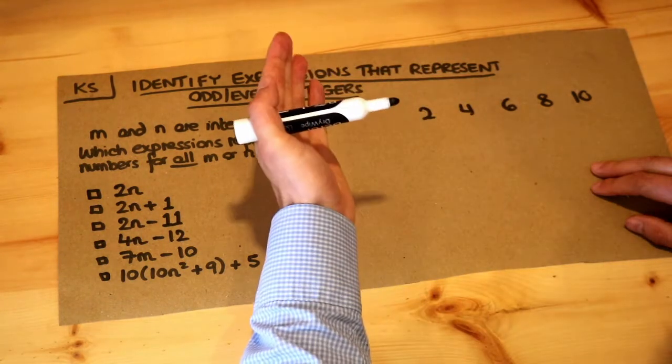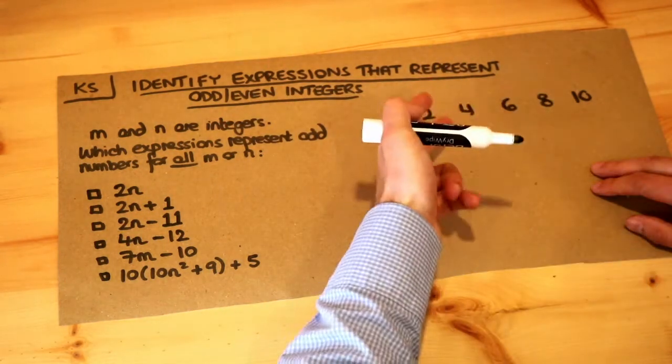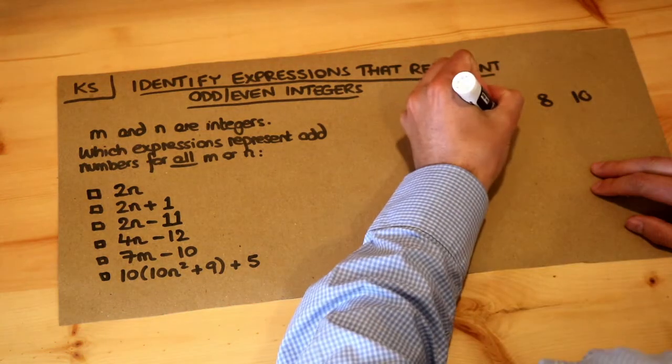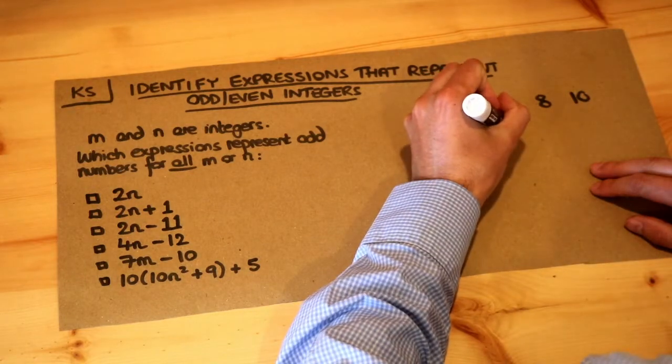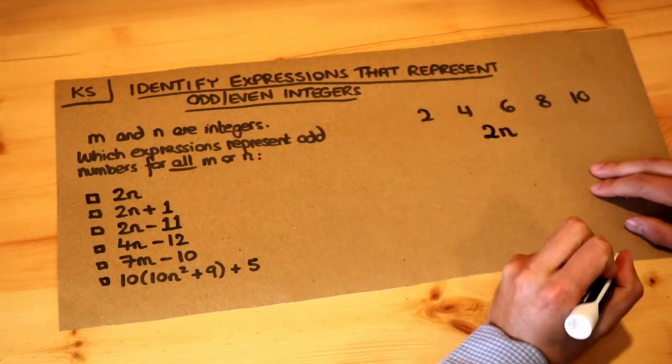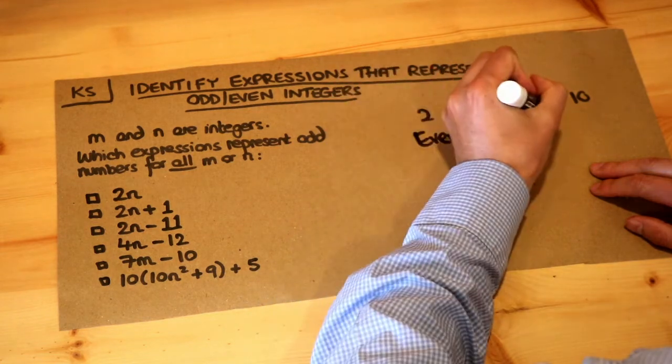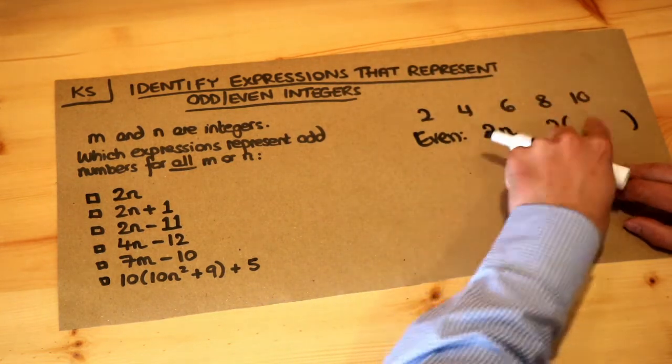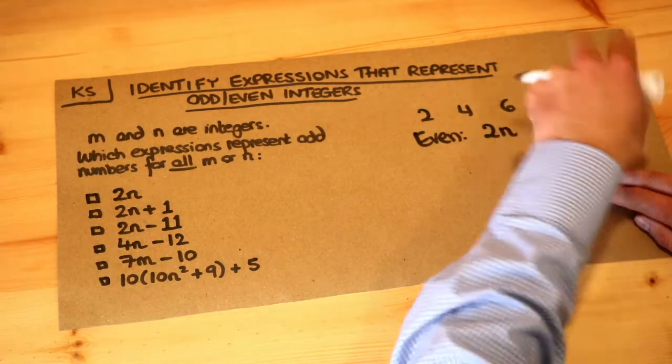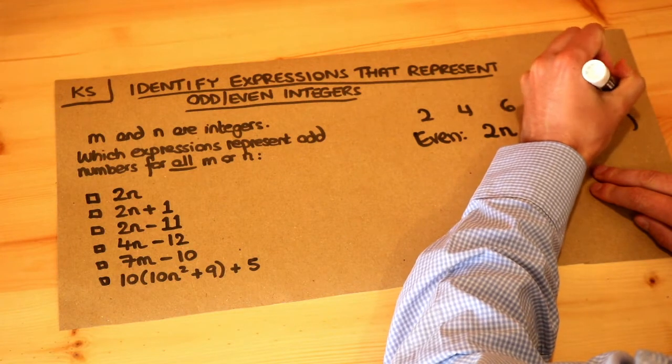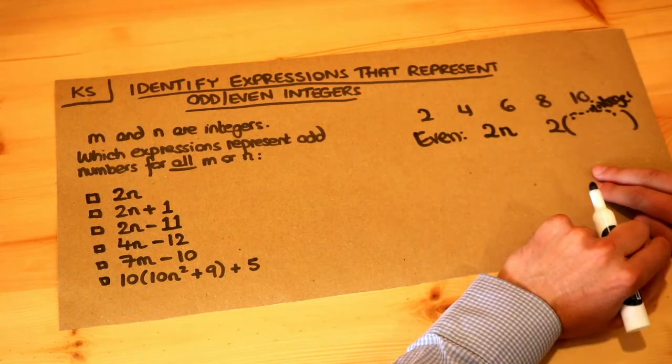So if we took some integer and we times it by 2, that's going to give us some even number. In general, if n was some kind of integer, then if we doubled that integer, we can guarantee that's going to be an even number. And in general, if we can do 2 times some expression in brackets that we know is an integer, then we know it's going to be an even number.